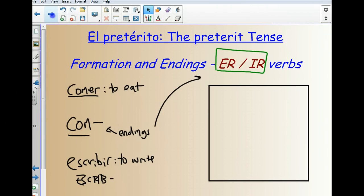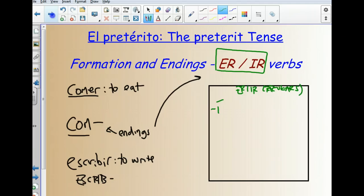And our endings are, instead of the A that you saw, let's put this ER and IR up here. And these are regulars. The yo form ending is I, with an I accent. Tu, ISTE. El/ella/usted, IO. Nosotros, IMOS. Vosotros, ISTEIS. And then ellos, ellas, ustedes, IERON.